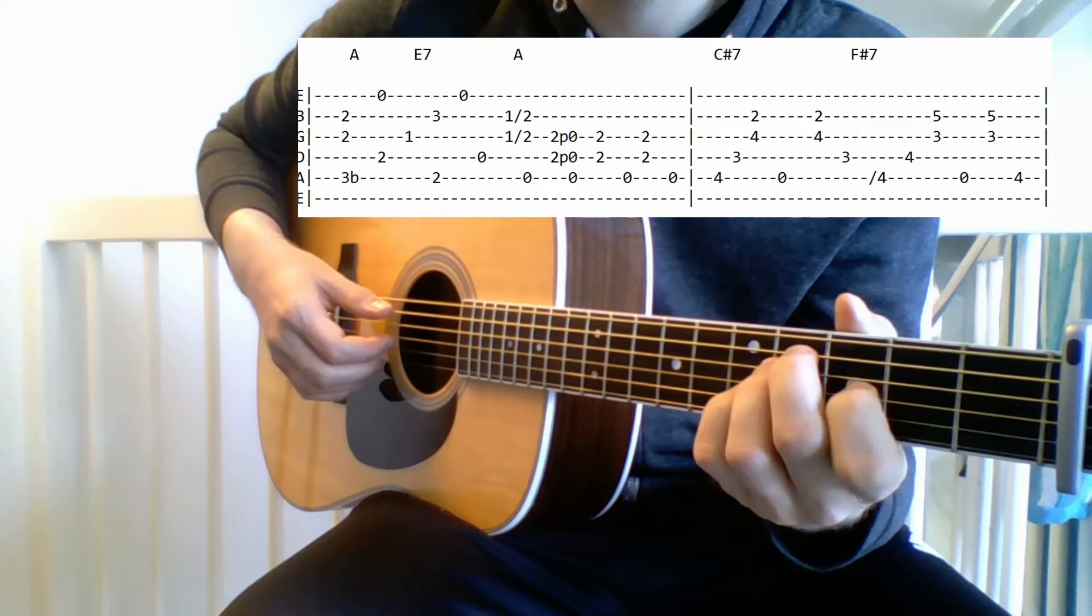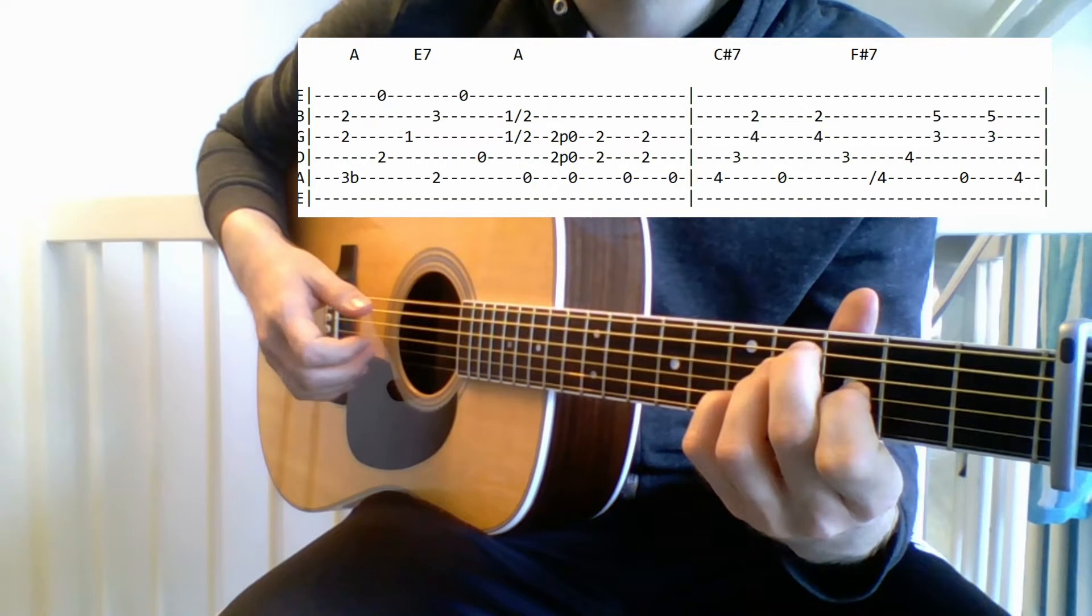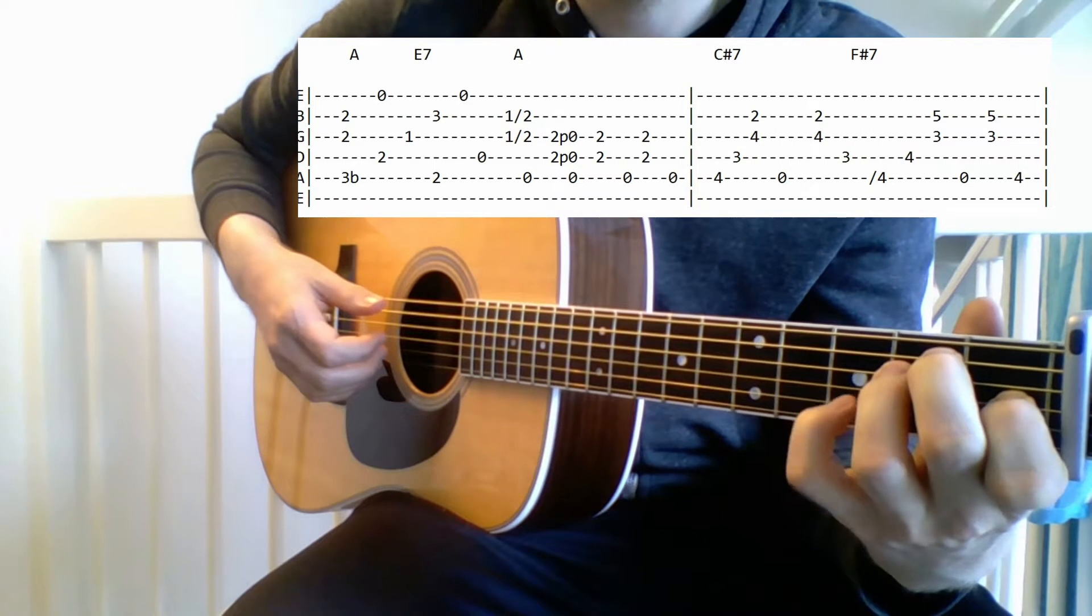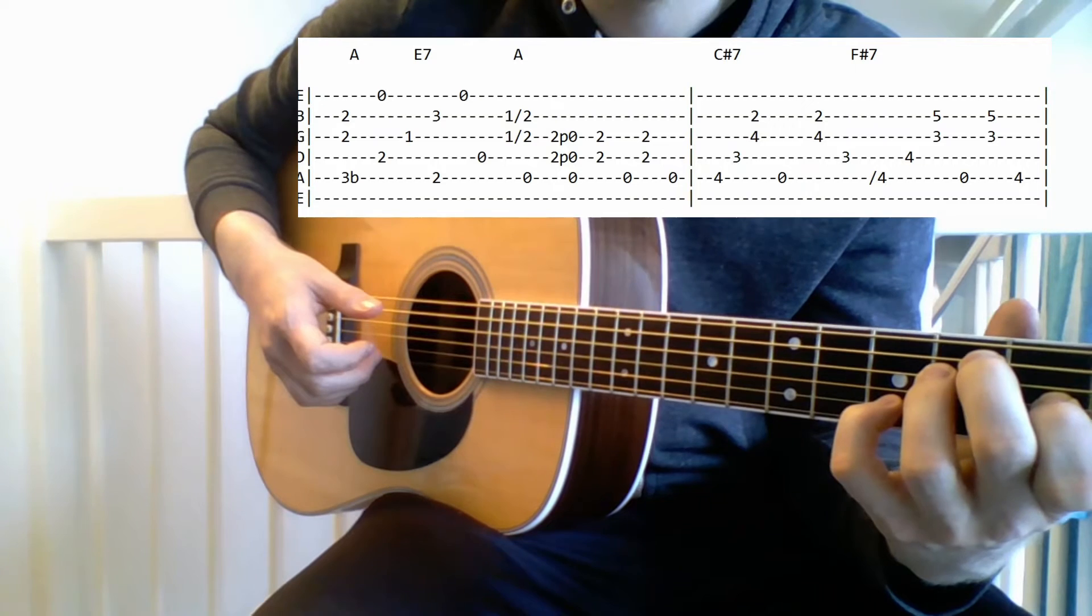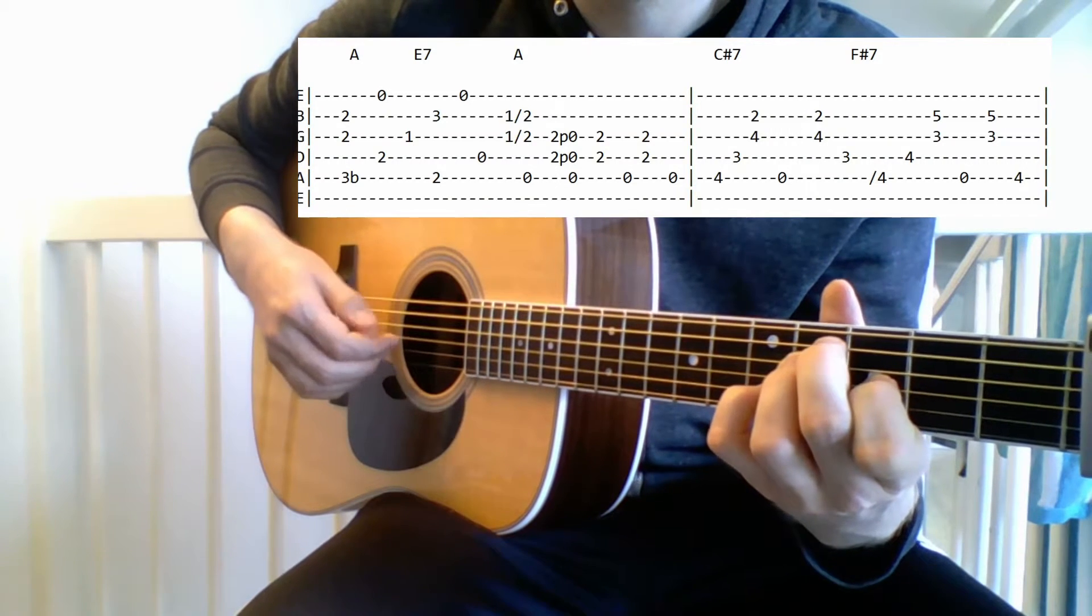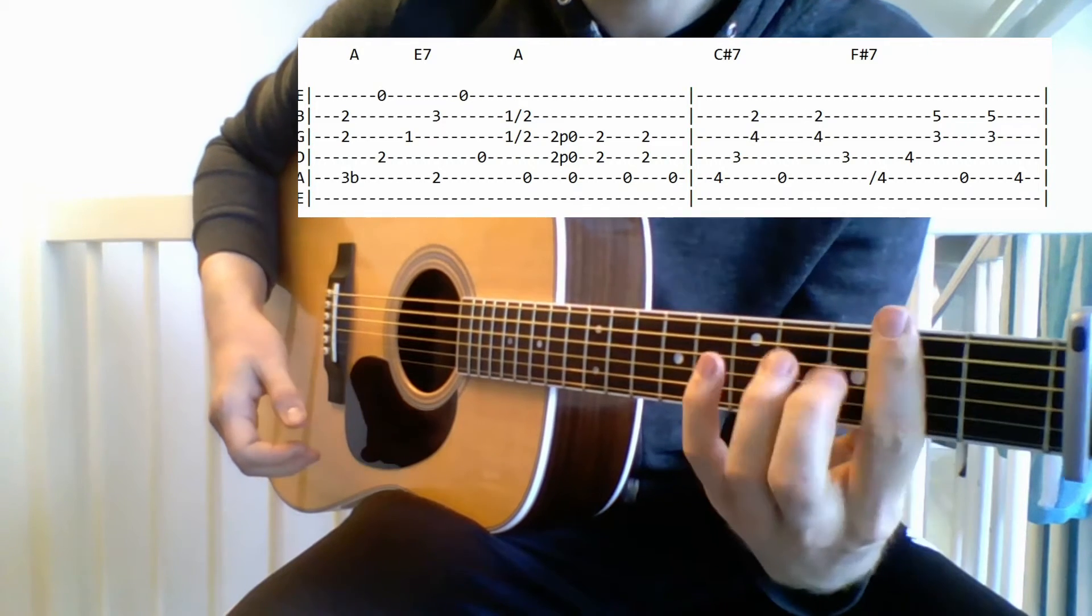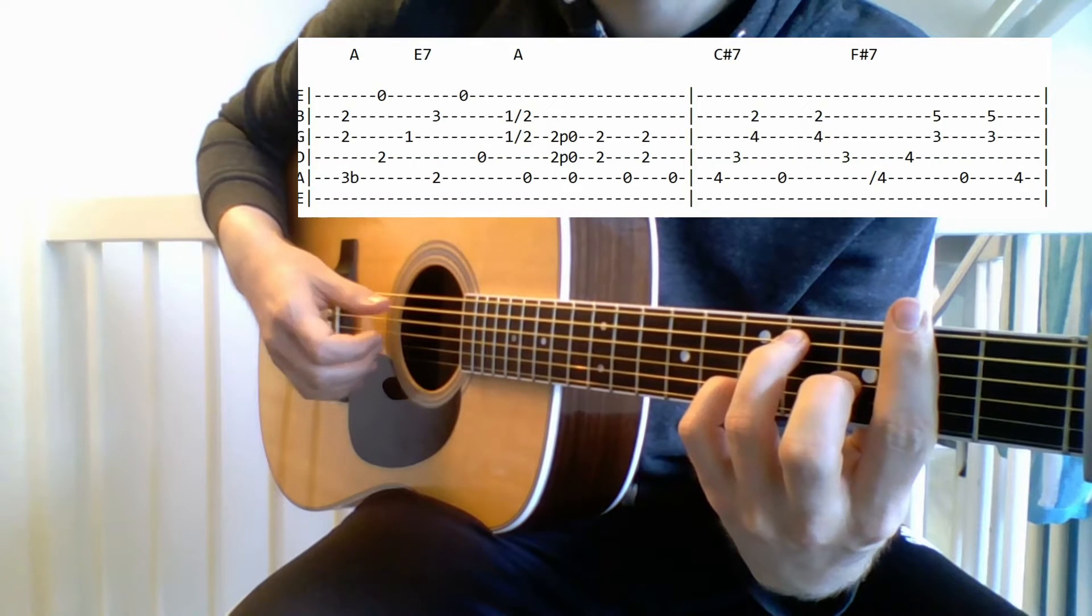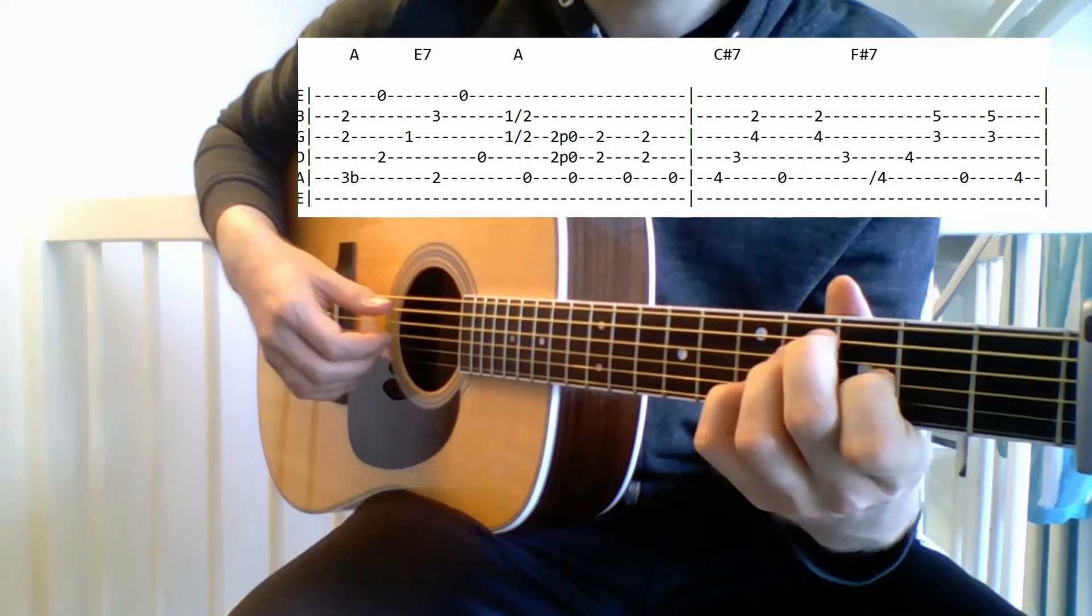And then we have the F sharp 7. It's an E shape with the 7th here on the B string, moved up two frets. And I'm not playing this as a bar chord because I'm only playing the strings I need.